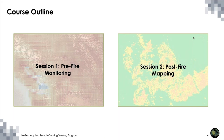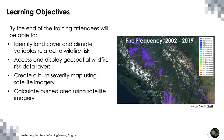The series has two sessions. Last session we talked about pre-fire monitoring and the climate and landscape conditions that influence fire ignition and spread. Today's session focuses on post-fire mapping and monitoring. By the end of the training, you should be able to identify land cover and climate variables related to wildfire risks, access and display wildfire risk data layers, create a burn severity map using satellite imagery, and calculate burned area statistics — all using Google Earth Engine.